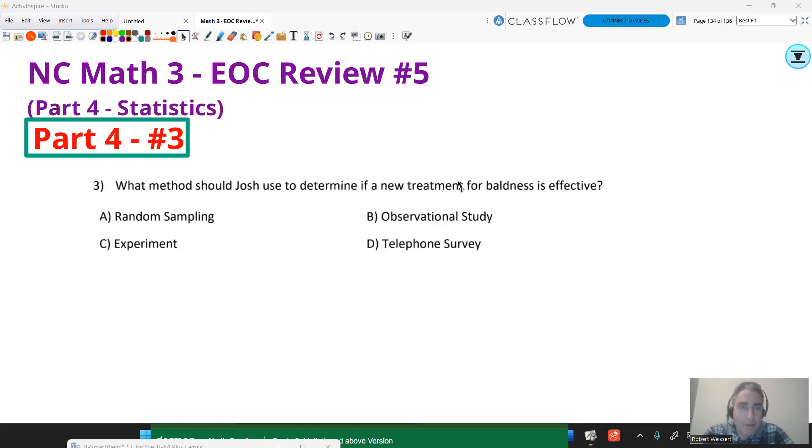Number three. Which method, what method should Josh use to determine if a new, why does it got to be Josh? Determine a new treatment for baldness is effective. Random sampling, experiment, observational study, or telephone survey. Hello, is your baldness treatment working? I don't think a telephone survey is going to be very practical. Observational study, maybe we could do that. But I think we're trying to show cause and effect, right? Cause and effect is best left to the experiment. Can we give them a treatment and compare with another treatment? So we want to compare treatments. And I think an experiment is a very good thing to use for that model. So experiment is going to be my vote on that one.